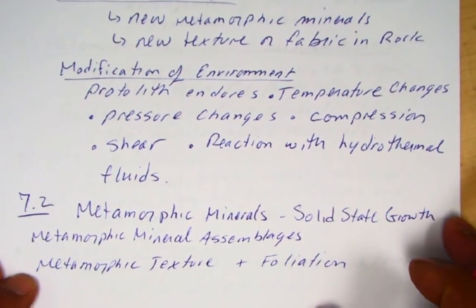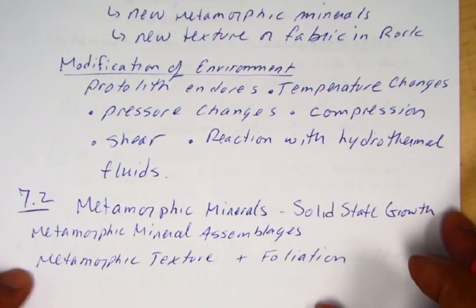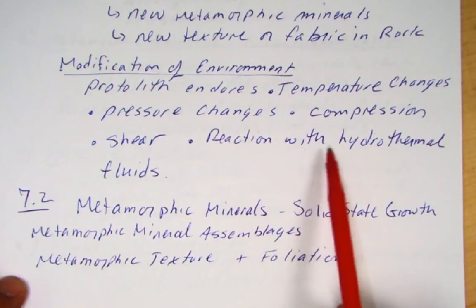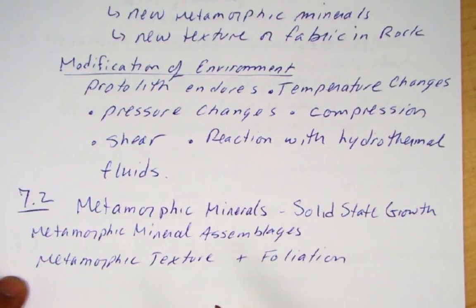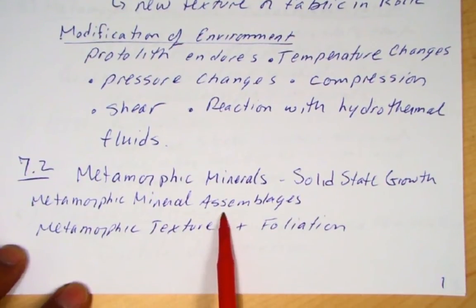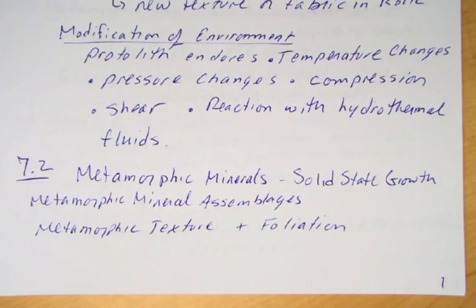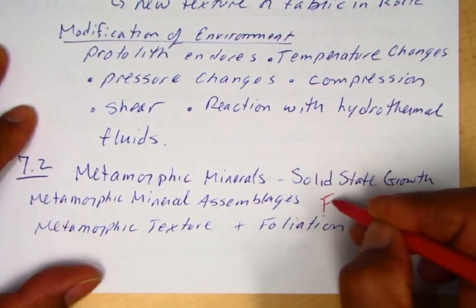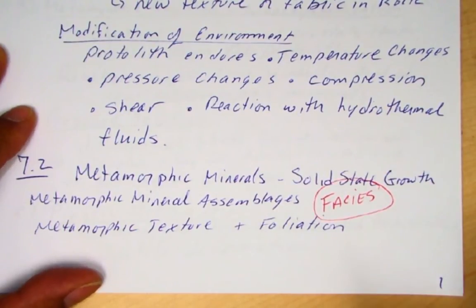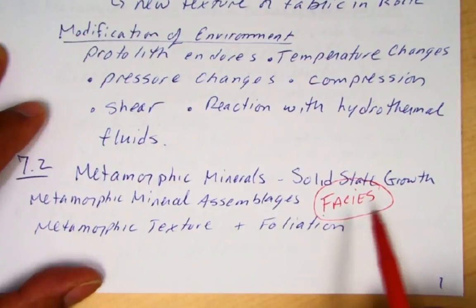Because there are going to be different temperatures, different pressures, and different reactions with a variety of fluids, we're going to get different minerals that form. These metamorphic minerals are important because they occur as assemblages, and we can use these assemblages to tell us about the pressure and temperature at which these rocks formed. Later I'll talk about facies — a group of minerals or rocks that define a tectonic environment or geologic setting.